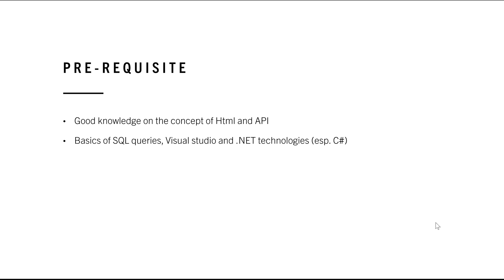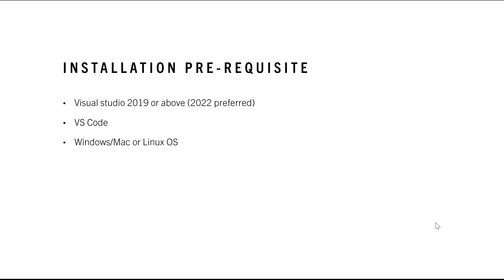You need a basic understanding of C# — that is most important — because we are not going to cover C# basics in this course. The installation prerequisite is also quite simple. All you need is Visual Studio 2019 or above; 2022 is preferred as it's the newest version. You can download the community edition for free. Also make sure you have VS Code if you're familiar with it, as the first few lectures will use VS Code. You can use any operating system — Windows, Mac, or Linux — as we'll be using .NET 5 and .NET 6 interchangeably.